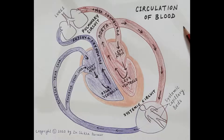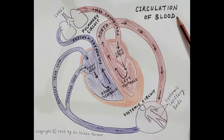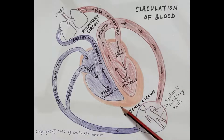We will talk about the circulation of blood. In the body there are two types of circulation: one is the pulmonary circulation and the other is the systemic circulation. We will discuss both these circulations.